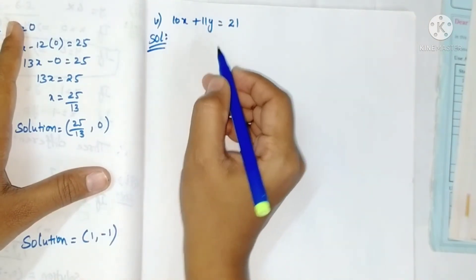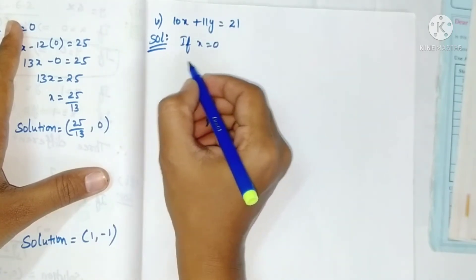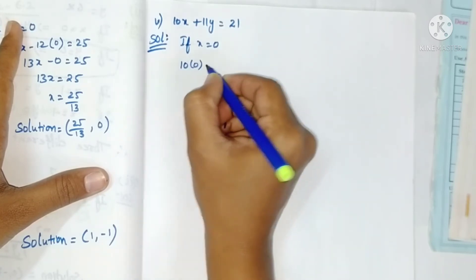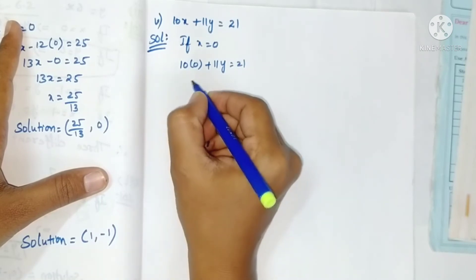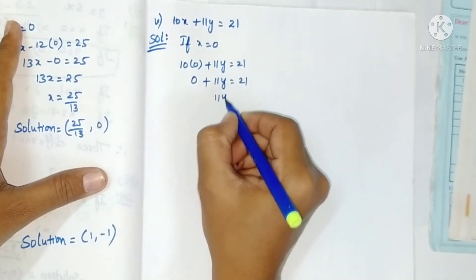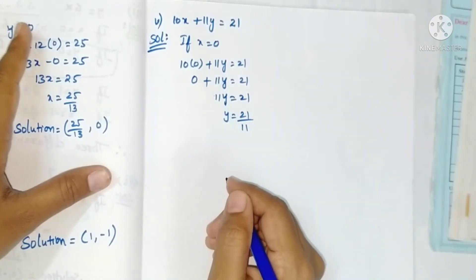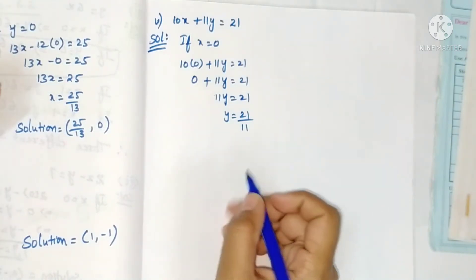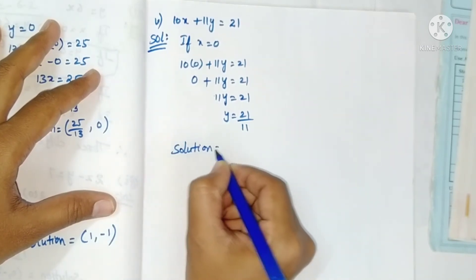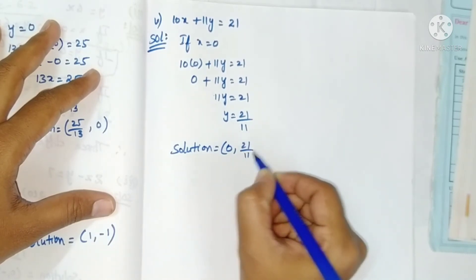Fifth equation: 10x plus 11y = 21. Take x = 0: 10 into 0 plus 11y equals 21, so 0 plus 11y equals 21, giving 11y equals 21. Since 11 and 21 have no common factor, y equals 21 by 11. Solution is (0, 21/11).